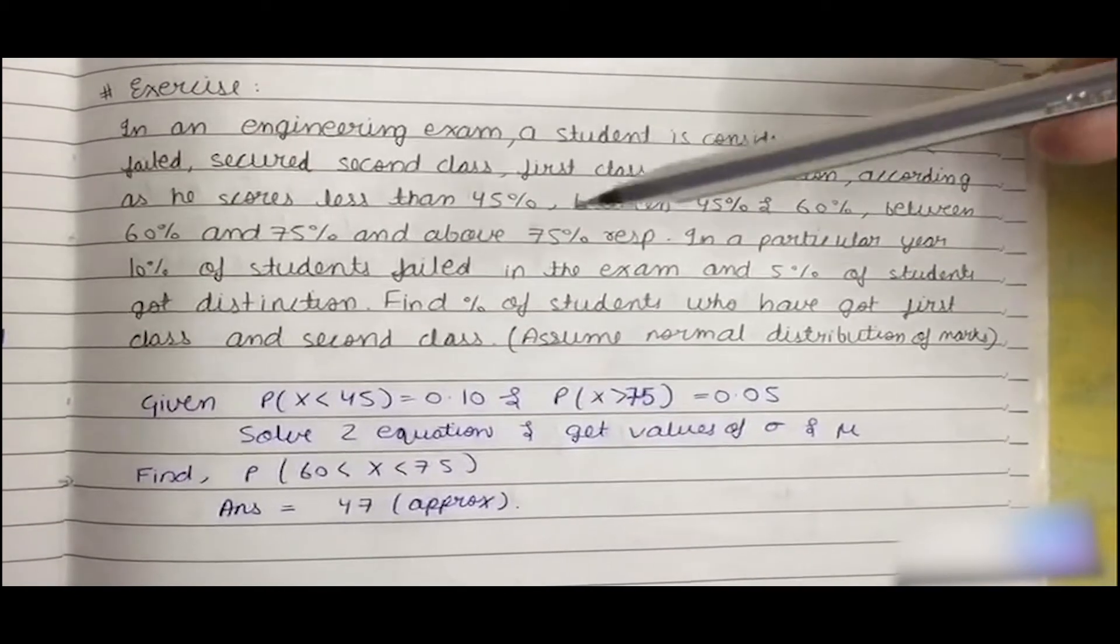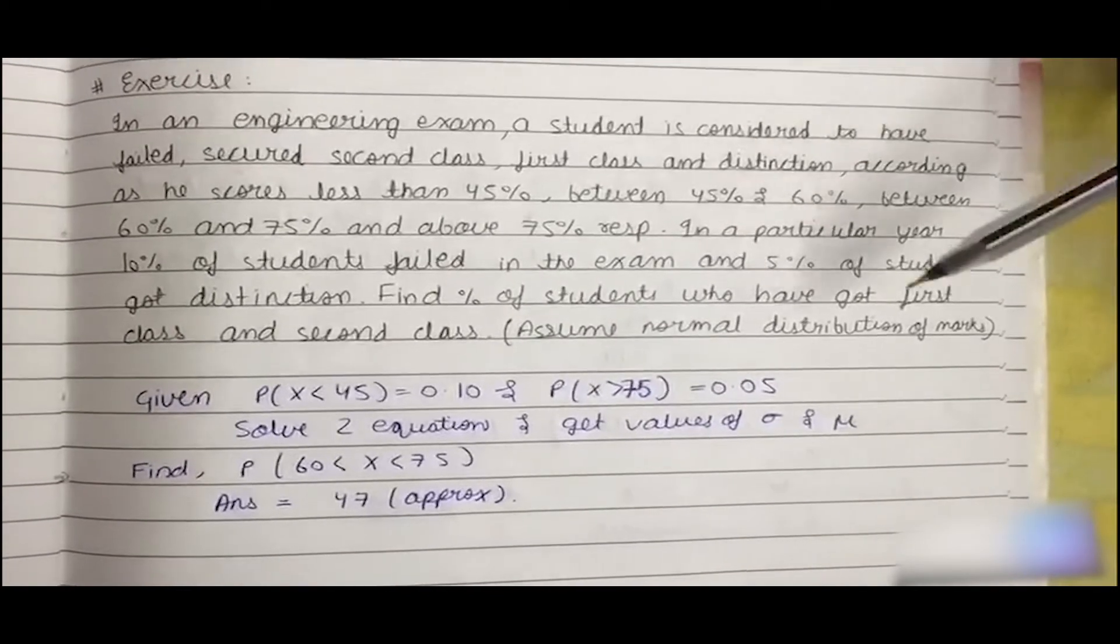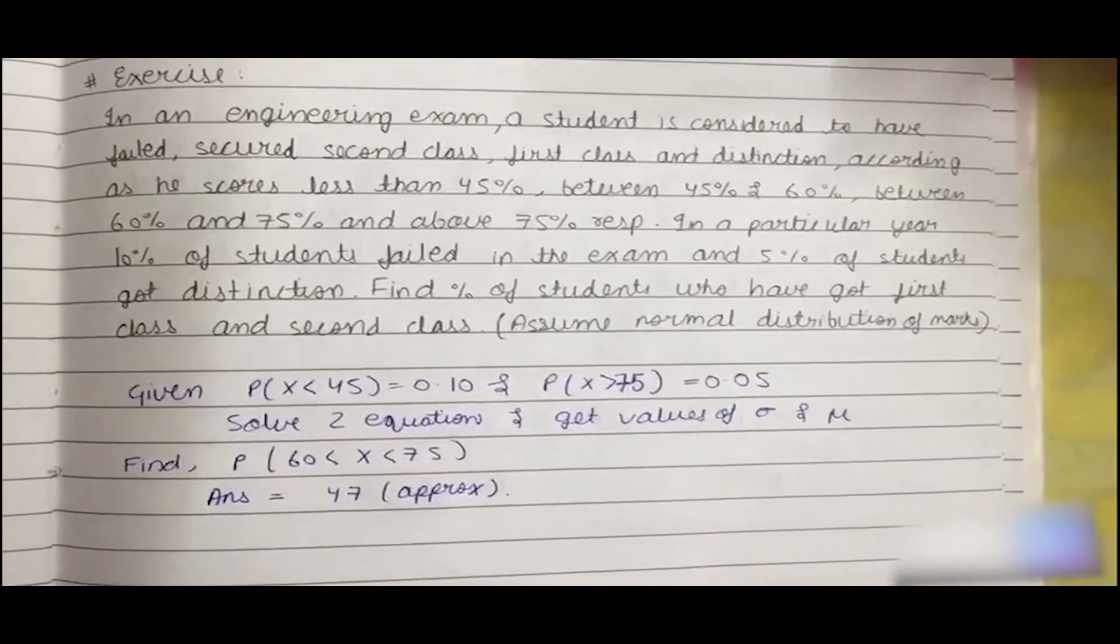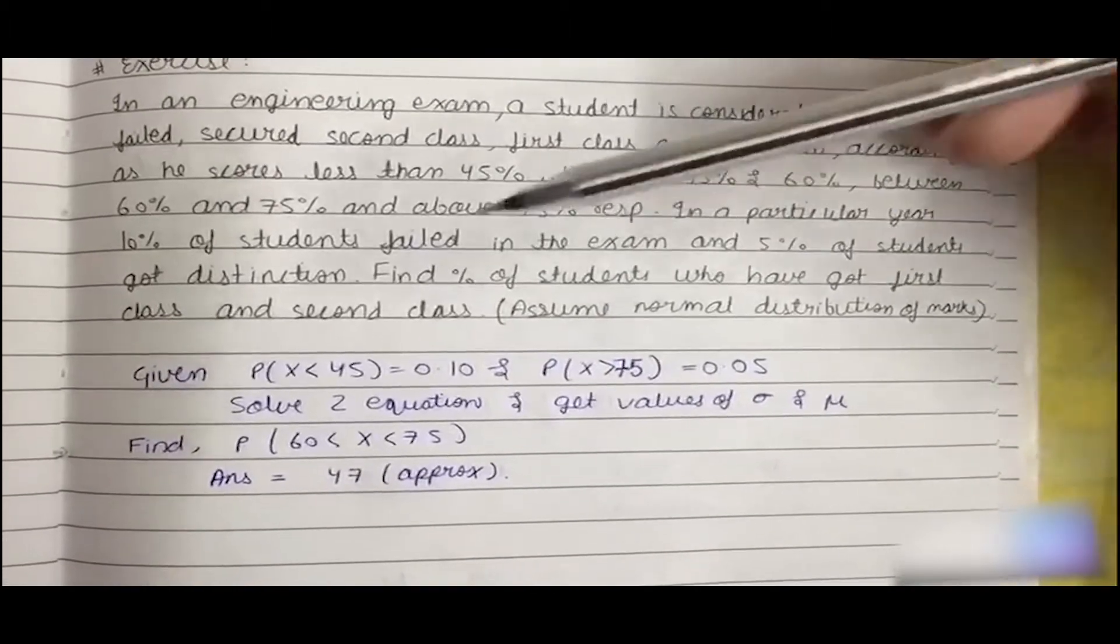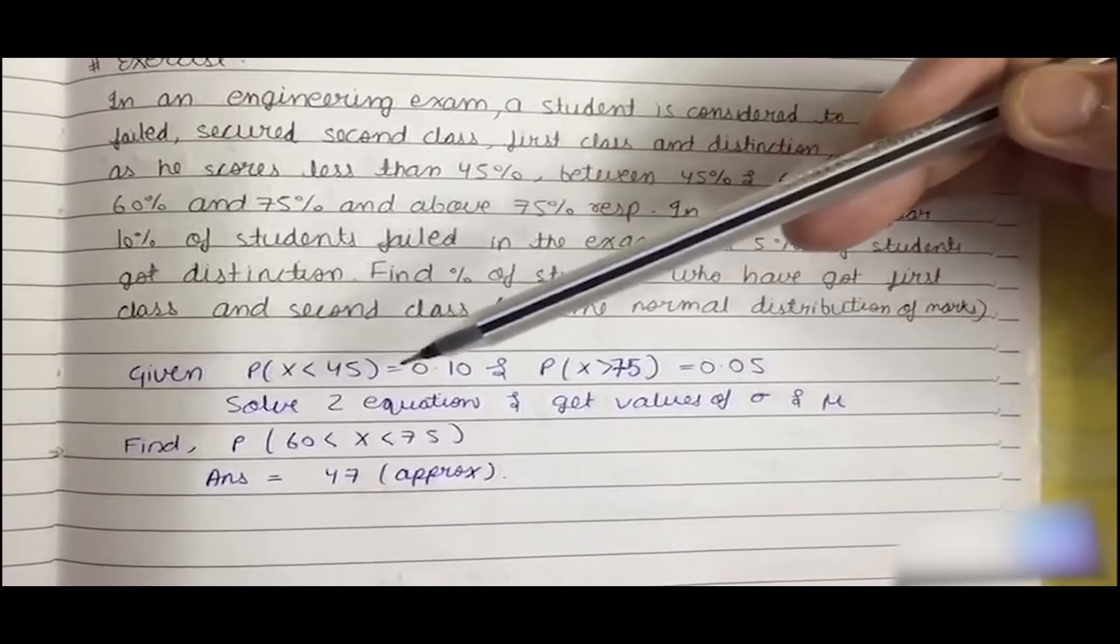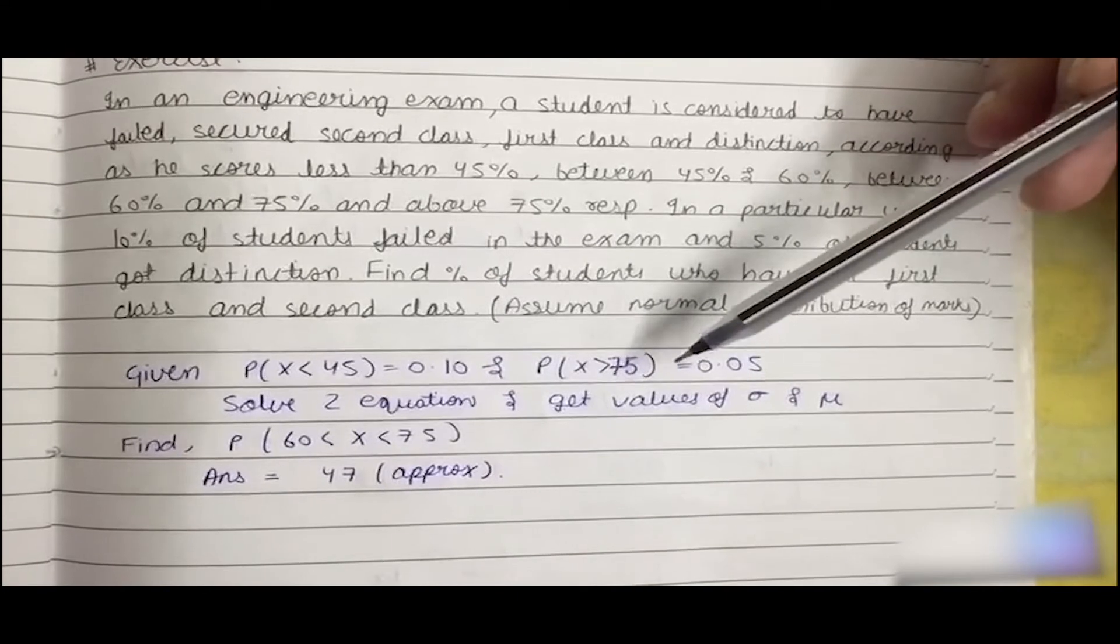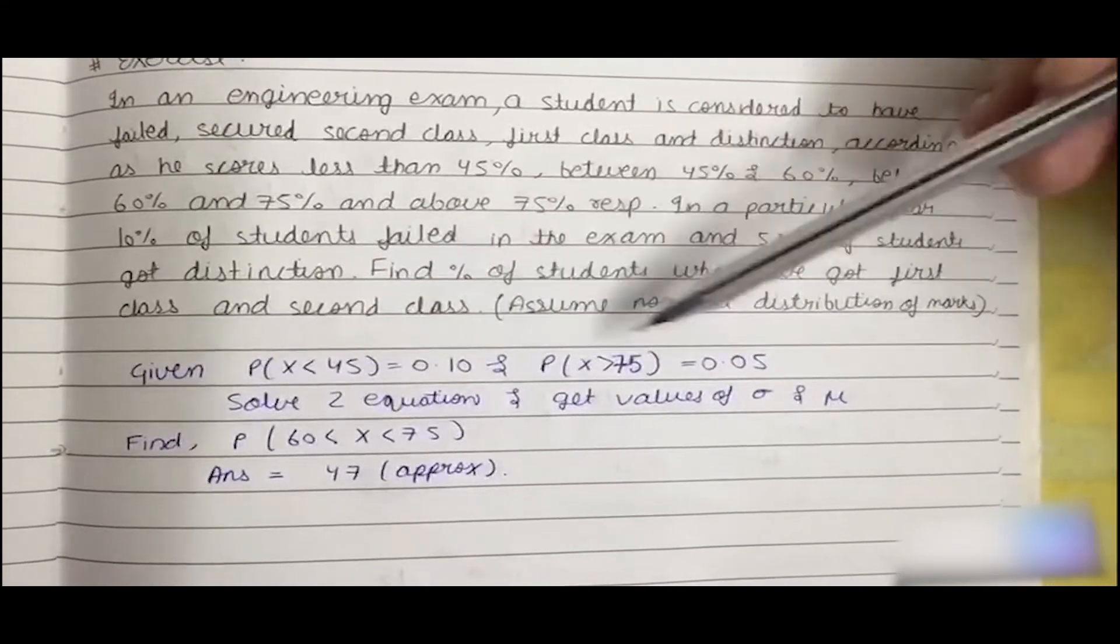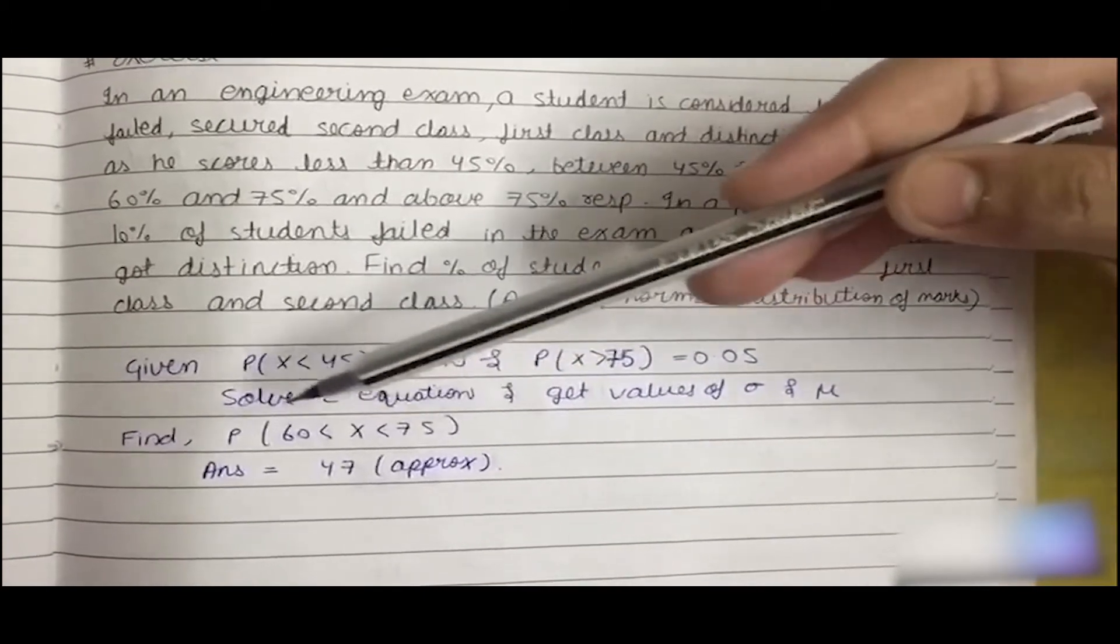So if in a particular year 10 percent students failed, which means they get less than 45, and 5 percent students got distinction, which means they score above 75, find the percentage of students who got first class and second class. As a hint, I have given that P(X less than 45) equals 0.10 and P(X greater than 75) equals 0.05. If we solve these two equations we'll get the values of sigma and mu, and we can put that in to find the probability between 60 to 75. The answer would be 47 approximately. Thank you.